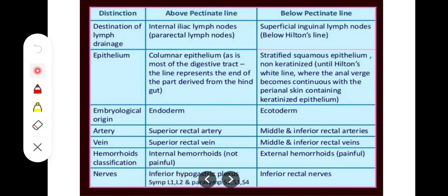Regarding nerve supply differences: the upper one-third is supplied by the inferior hypogastric plexus, which is autonomic — sympathetic from L1-L2 and parasympathetic from S2, S3, S4. The lower two-thirds are supplied by the inferior rectal nerve, which is a somatic nerve from S2, S3, S4. Because of this difference, external hemorrhoids occurring in the lower portion are painful. The upper one-third is sensory to ischemia, distension, or spasm, while the lower two-thirds is sensory to pain, touch, temperature, and pressure.